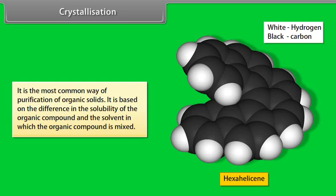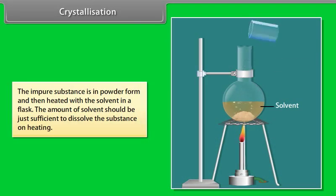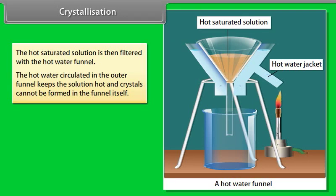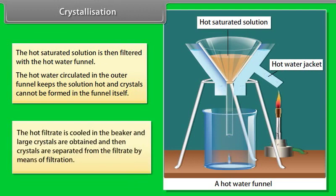Crystallization: It is the most common way of purification of organic solids. It is based on the difference in the solubility of the organic compound in the solvent. The impure substance is powdered and heated with a solvent in a flask. The amount of solvent should be just sufficient to dissolve the substance on heating. The hot saturated solution is filtered using a hot water funnel. The hot filtrate is cooled in the beaker, and large crystals are obtained, which are then separated from the filtrate by filtration.